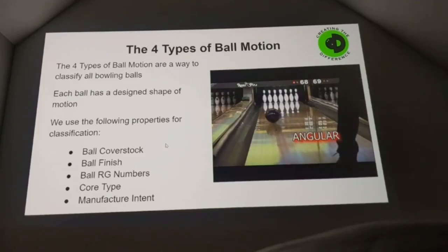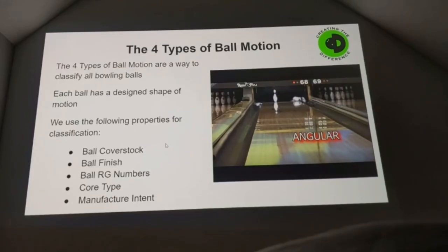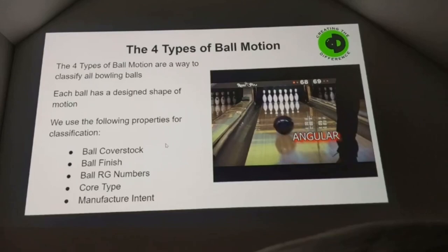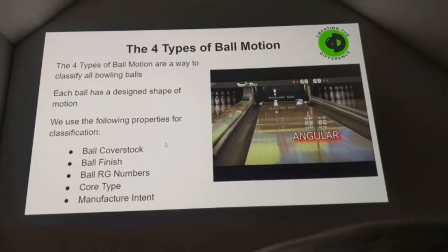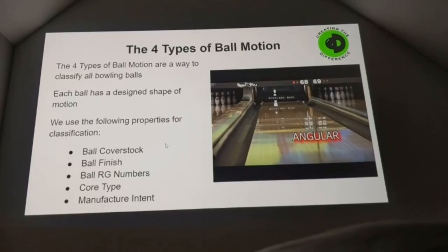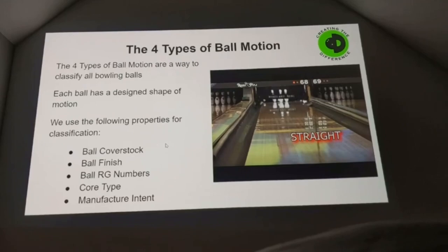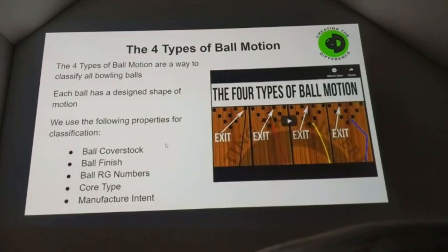Then we'll go to the most fun one, which is 'angular.' The ball gets way out there, makes a super hard turn, and actually runs over the nine pin. That's the one everybody likes to see. Obviously there are times when that's advantageous and times when it isn't. And 'straight' — the ball goes fairly straight, as you would expect. So that's what they look like.